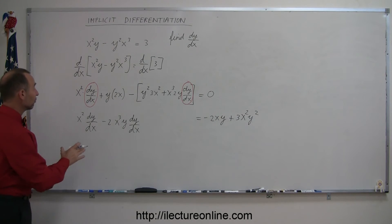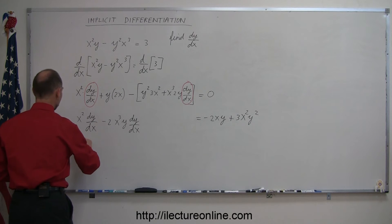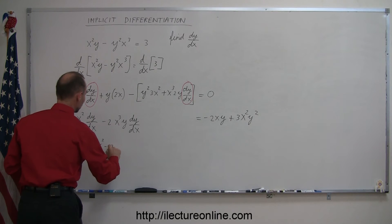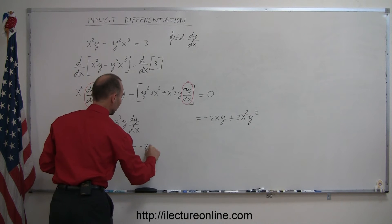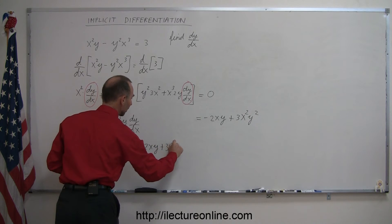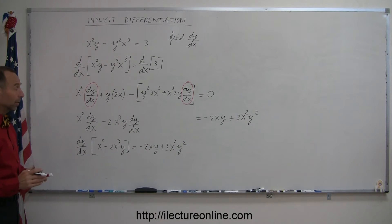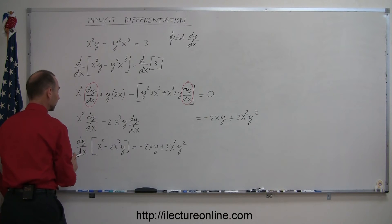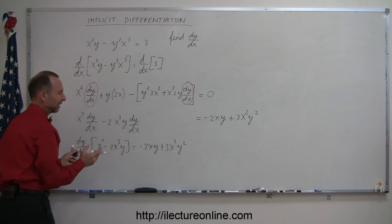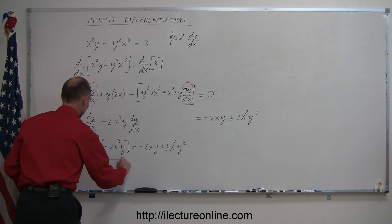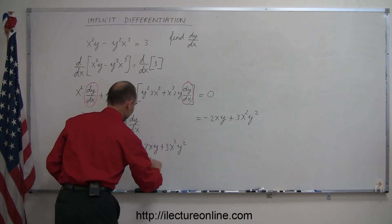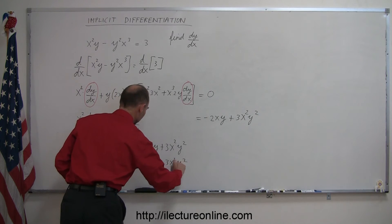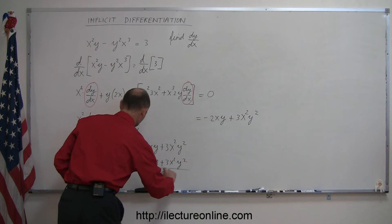Now the next step is to factor out dy/dx on the left side, so we get dy/dx times x squared minus 2x cubed y. And that equals the right side, which is minus 2xy plus 3x squared y squared. Then the final part is to divide both sides by x squared minus 2x cubed y. We divide the left side and the right side by the exact same thing — x squared minus 2x cubed y — as well, dividing the right: minus 2xy plus 3x squared y squared, all divided by x squared minus 2x cubed y.